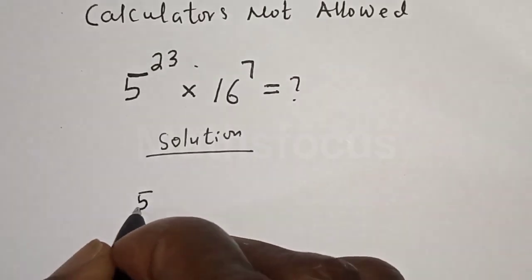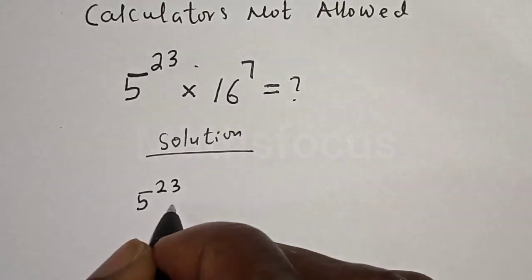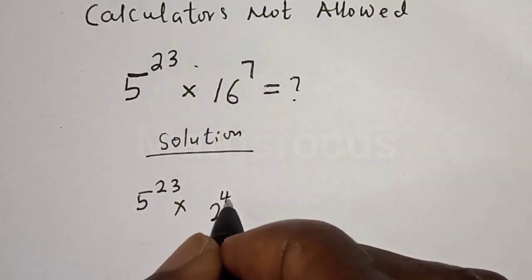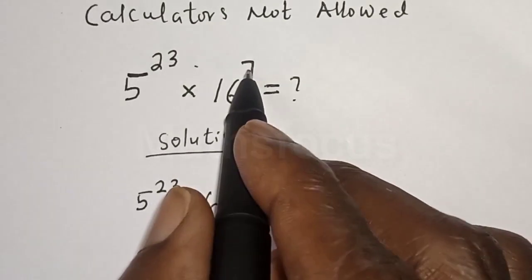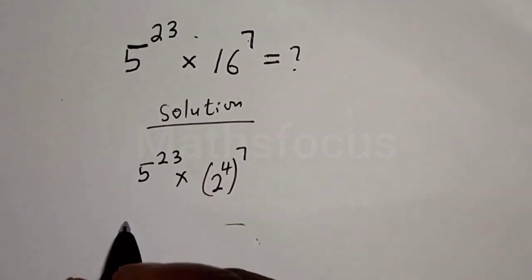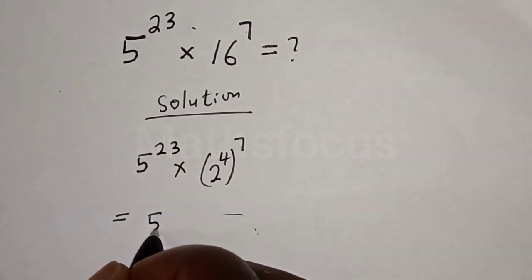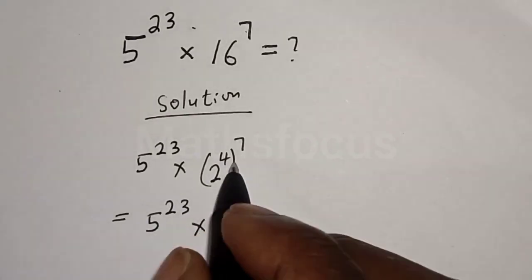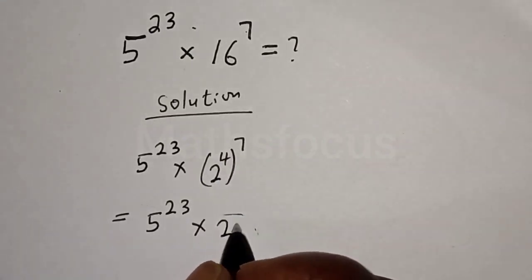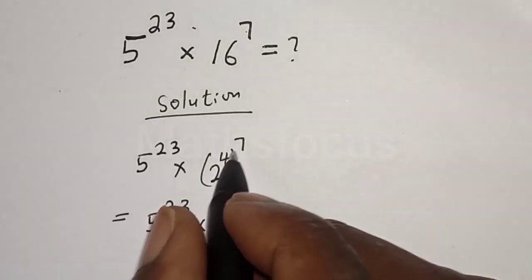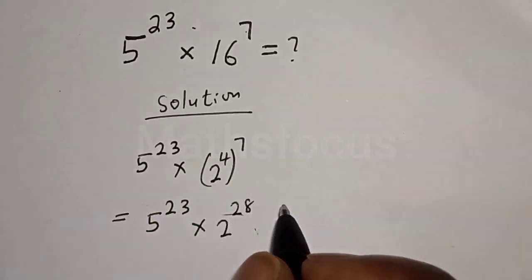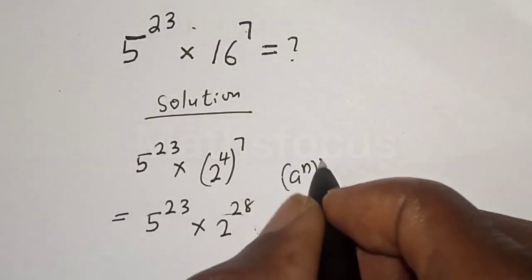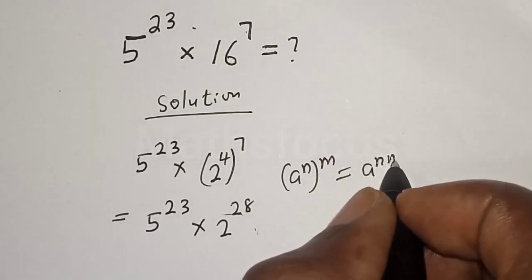16 can be written as 2 raised to power 4, so 16 raised to power 7 becomes 2 raised to power 4, then raised to power 7. This gives 5 raised to power 23 multiplied by 2 raised to power 28, using the rule that A raised to power N raised to power M equals A raised to power N times M.